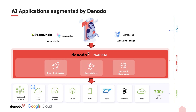The good news is that the powerful combination of Vertex AI and Denodo makes it incredibly easy to build next-generation AI applications, leading to improved customer experiences, enhanced decision-making processes, and increased operational efficiency across various business domains.